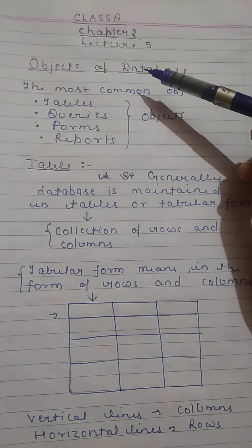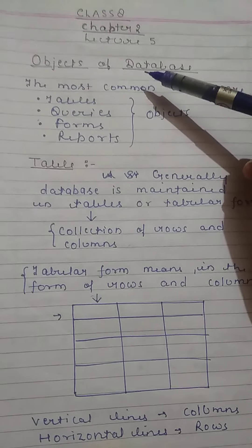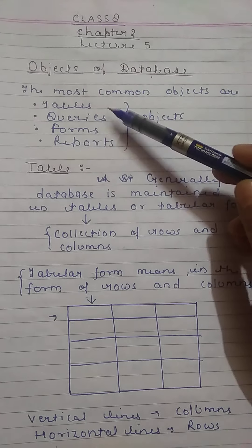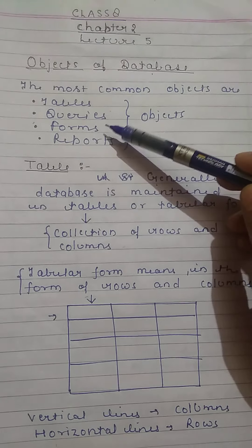The things that we use in our database are called objects. And the most common objects are tables, queries, forms and reports. It means all these are the objects of a database.